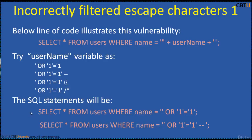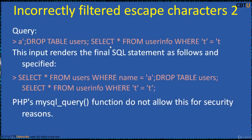With this input, the SQL statement becomes: SELECT * FROM users WHERE name = '' OR 1=1. Since the evaluation of 1=1 is always true, this will retrieve all records from the users table. Another example: this query can drop the table users, resulting in deletion of the table, while also retrieving all data from the user input table. The statement becomes SELECT * FROM users WHERE name = ''; DROP TABLE users; -- and then SELECT * FROM userinfo WHERE 't'='t'.